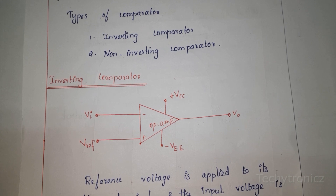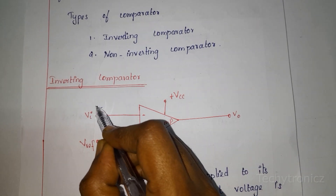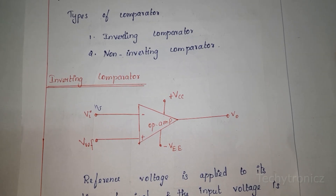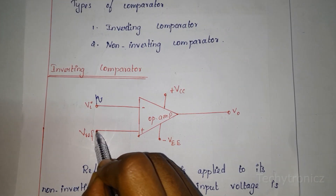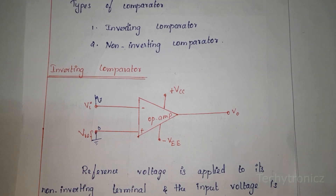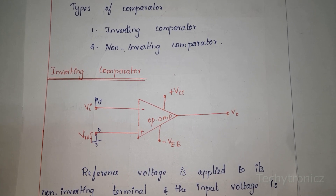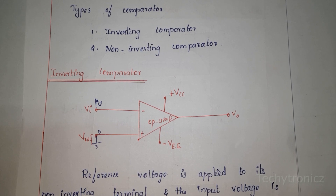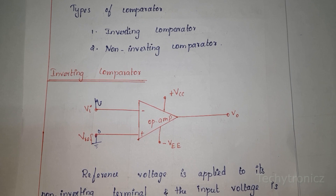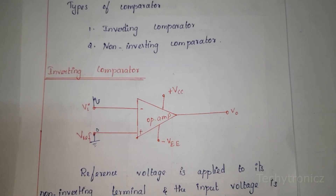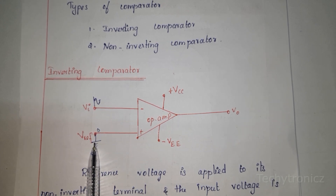Now let's see the operation. A sinusoidal input signal is applied to the inverting terminal, and 0 volts is applied to the non-inverting terminal. During the positive half cycle of the sinusoidal input signal, the voltage present at the inverting terminal of the op-amp is greater than 0 volts.